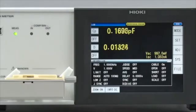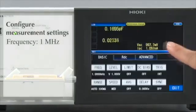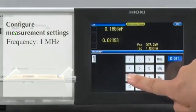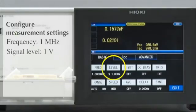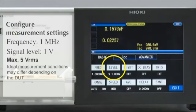Now configure the measurement conditions. Set the measurement frequency at 1 MHz. The measurement voltage will remain at the default setting of 1 V.